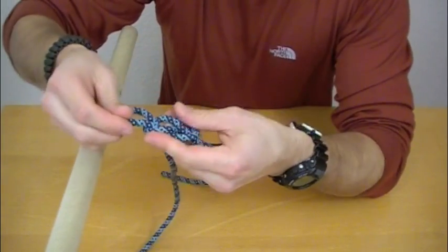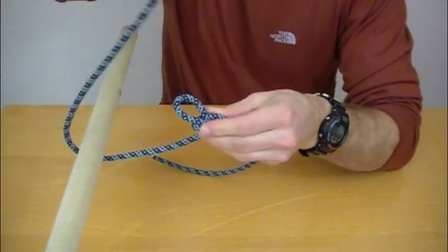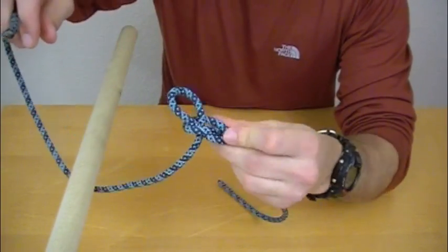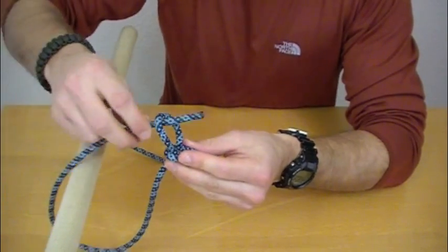Now you're going to flip the knot over, take your working end, come around your anchor point. You can see the bite there at the top. Come around the anchor point and come through the bite.